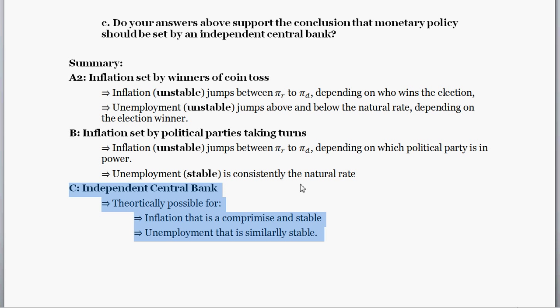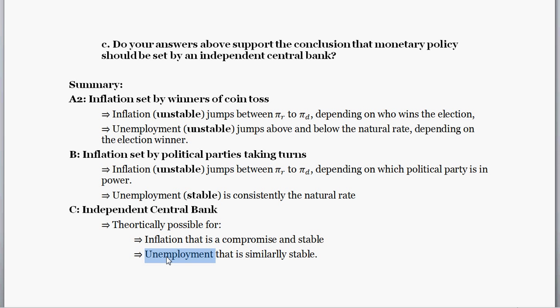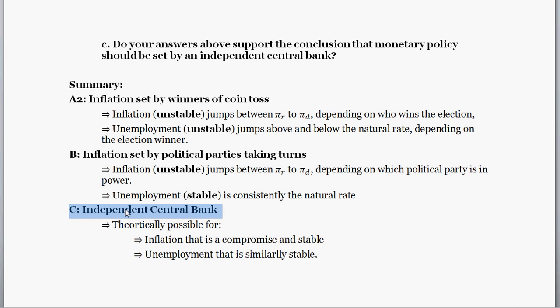So let's think hypothetically about an independent central bank. At the very least, it's theoretically possible for a central bank to set inflation at some stable, consistent level — perhaps a compromise between the two party rates. That would then imply, assuming expected inflation fell in line with realized inflation, that unemployment would also be similarly stable. So if your goals are stable unemployment and stable inflation — where realized inflation falls exactly in line with expected inflation — that leads into our Phillips curve where unemployment is stable and exactly equal to the natural rate. An independent central bank, at least hypothetically, could achieve those goals.